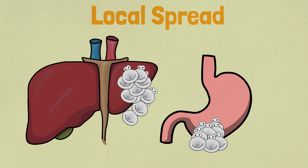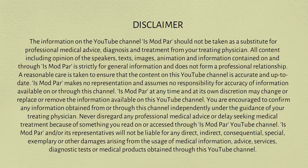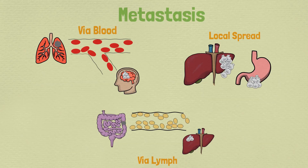Each type of cancer has a different speed and tendency for spreading. It may spread over few days, weeks or months, and in any one, two or all three ways in the body. Let us know in the comment section about topics you want us to make videos on.